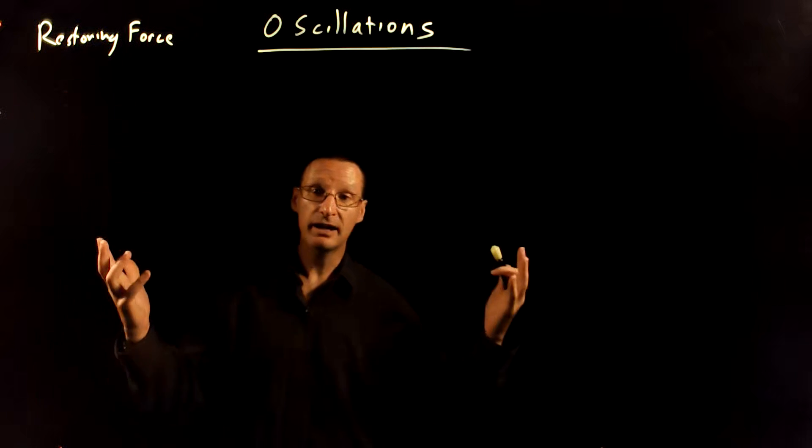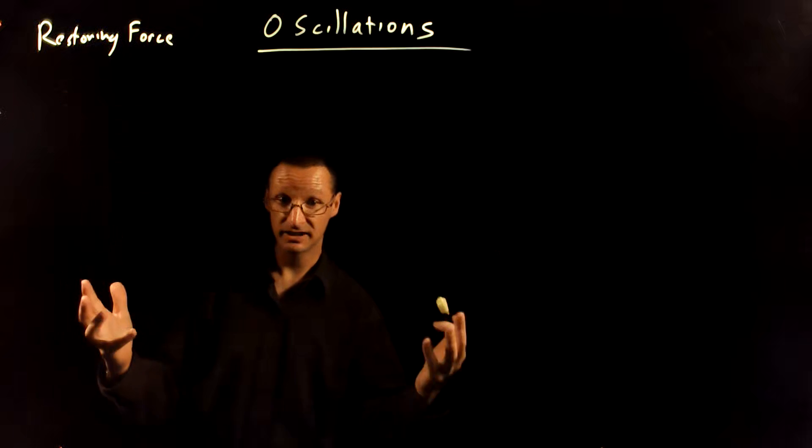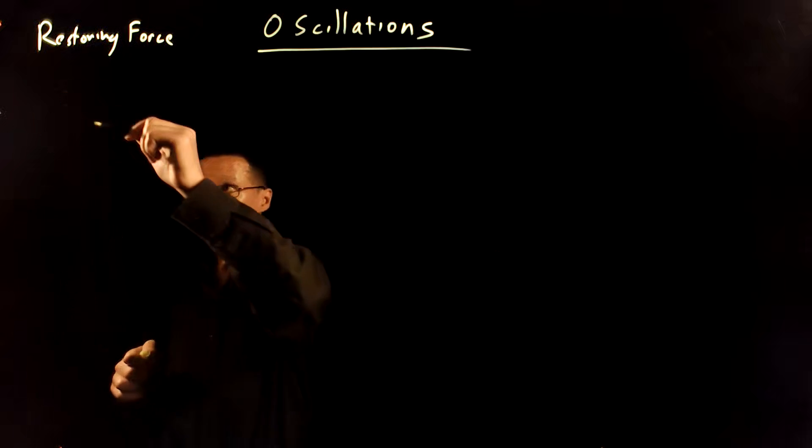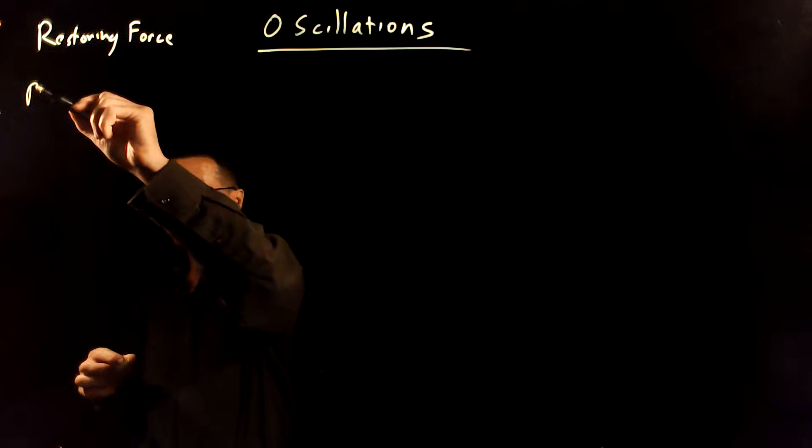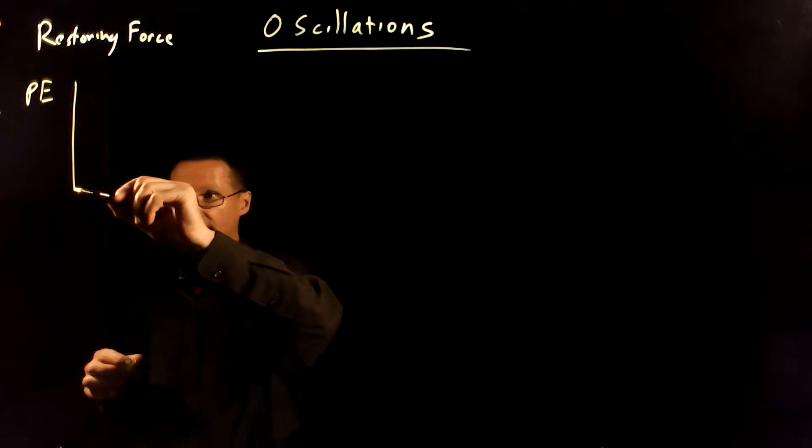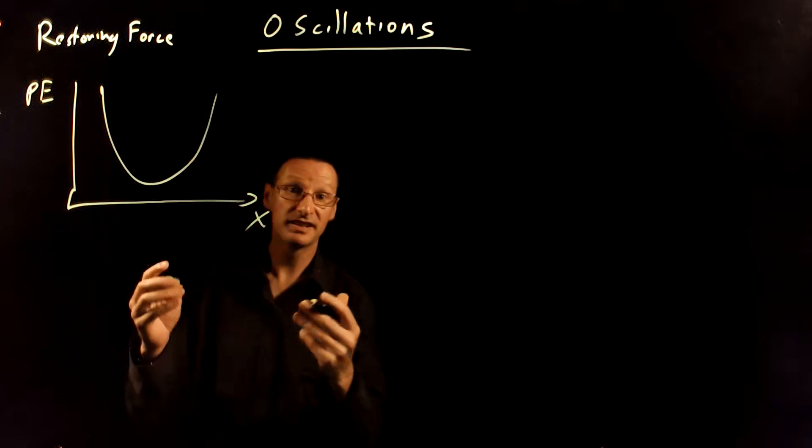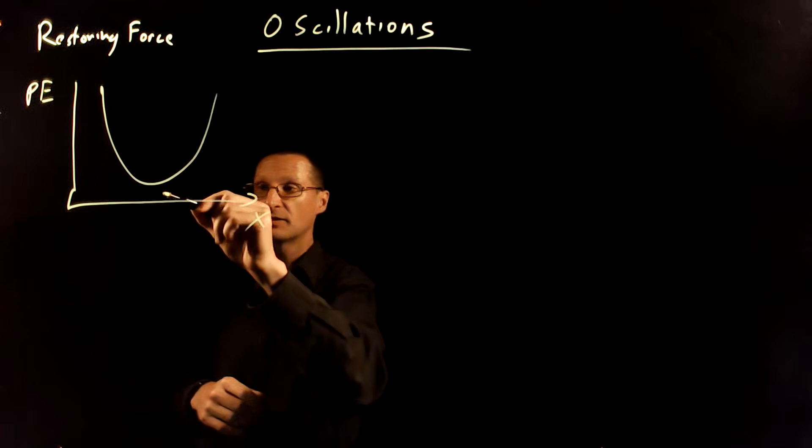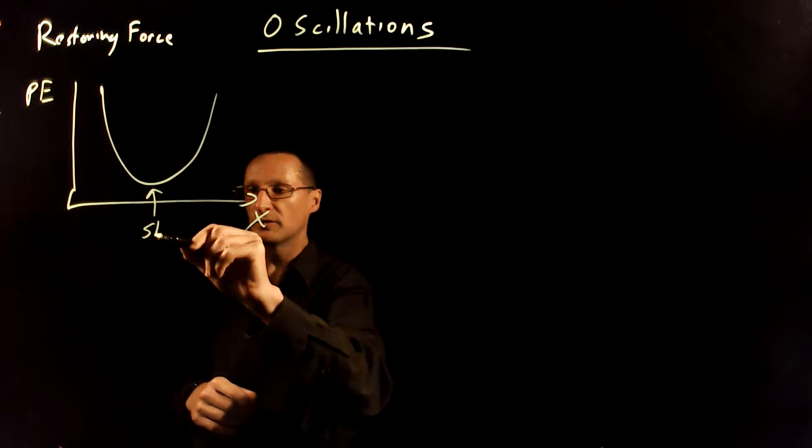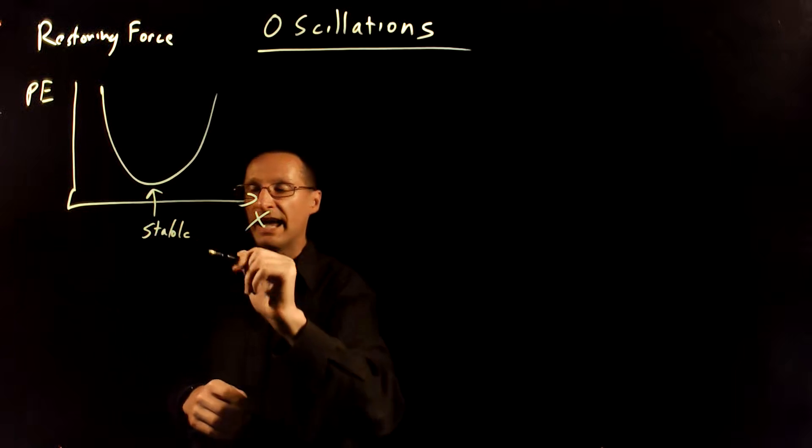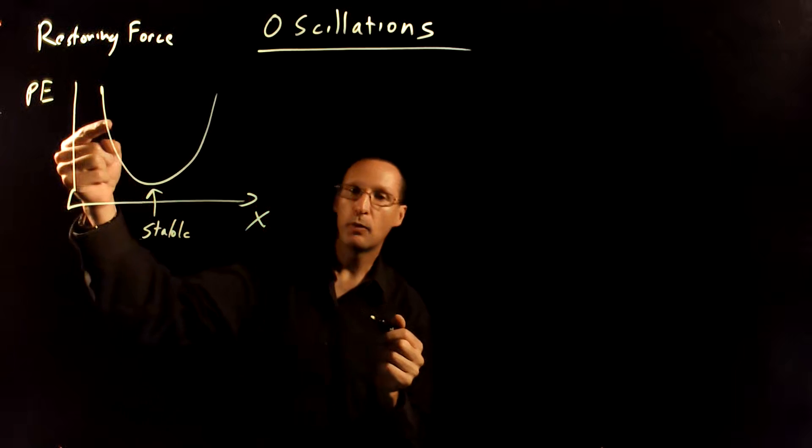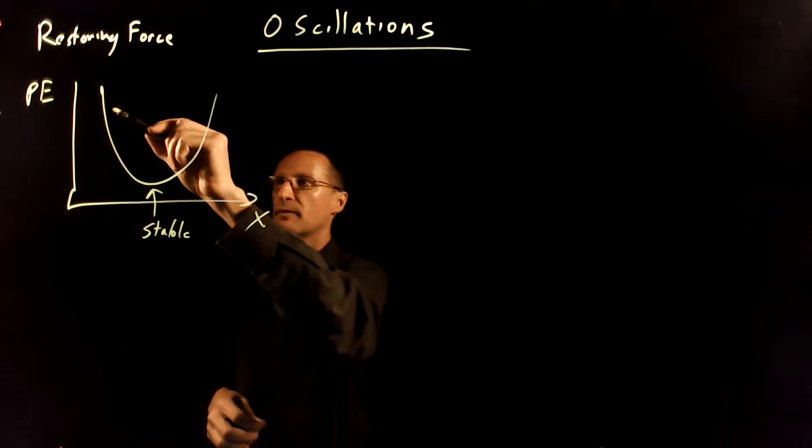So if you remember back when we talked about forces and their potential energy functions, anytime you have a potential energy function that has a valley in it like this, and this is potential energy plotted against position, it's going to have a stable equilibrium point here, and the force is always going to point back towards that stable equilibrium point.